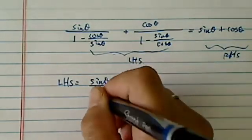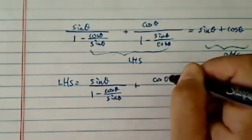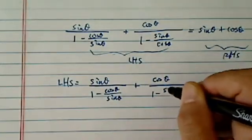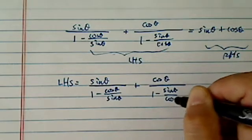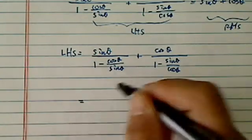So sine theta, 1 minus cosine theta, sine theta here, plus cosine theta, 1 minus sine theta, cosine theta. Okay, so let's do the similar thing we did last time. Let's finish completing this one.